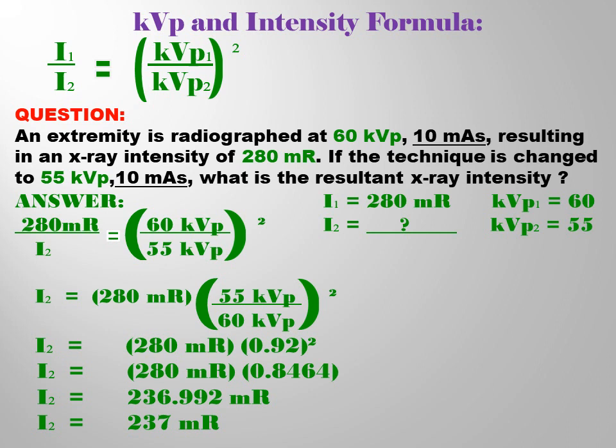KVP 1 is 60, KVP 2 is 55. Unknown is the new or final intensity.